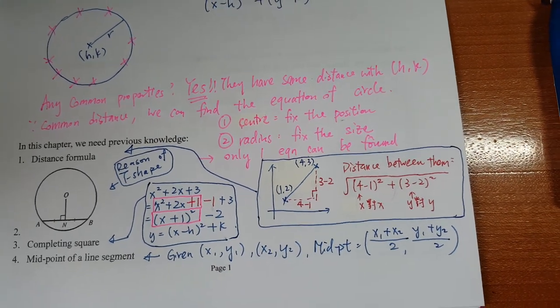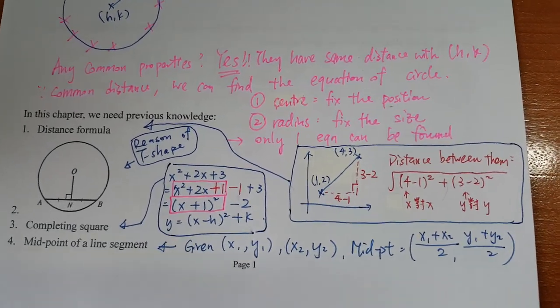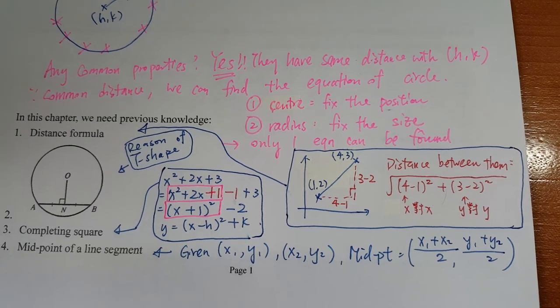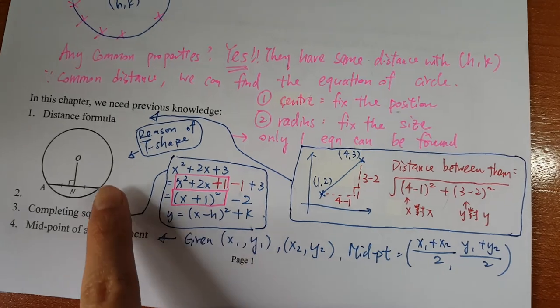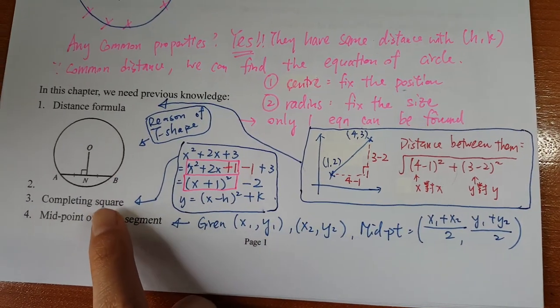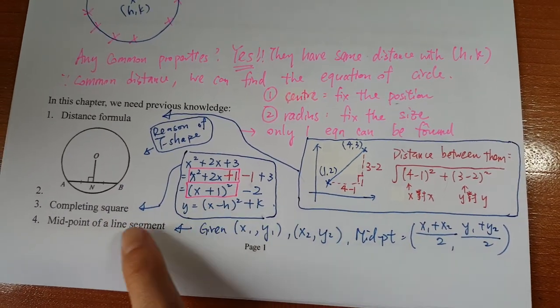You can use the Pythagorean theorem or we call it the distance formula to find. And then the reason of the T-shape—I've mentioned that before. I will not repeat completing square as well.